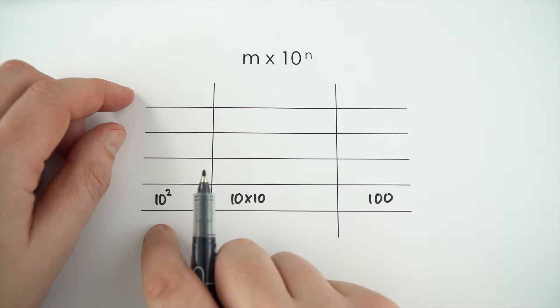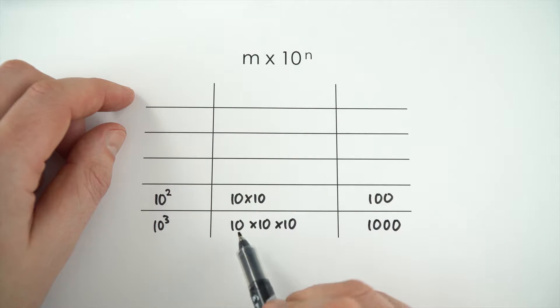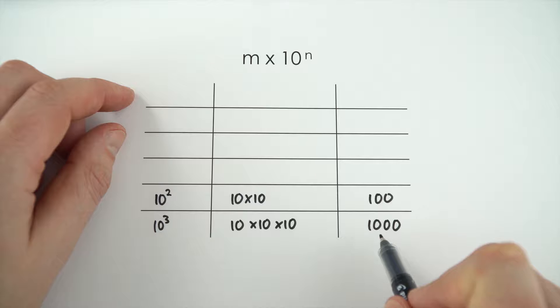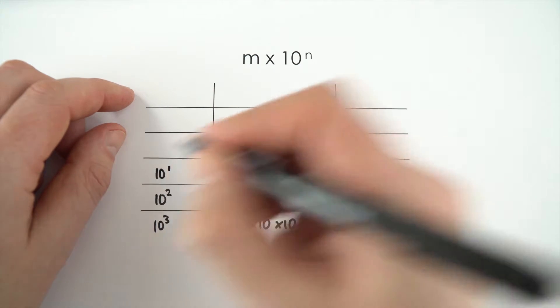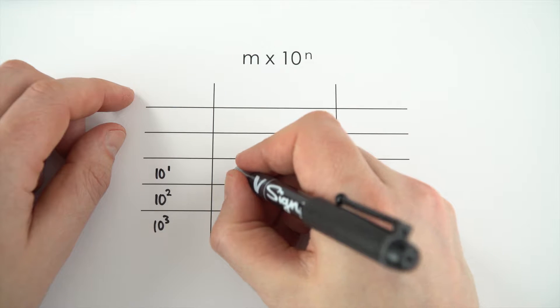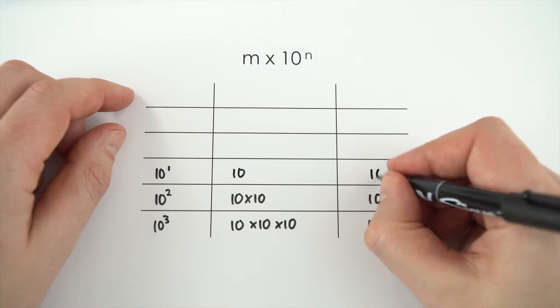And if we think about what 10 cubed is, that's just the same as 10 times 10 times 10, which is 1,000. Now, going back up, if we have 10 to the 1, well, this is a bit like saying it's just 10 on its own. So that's 10.